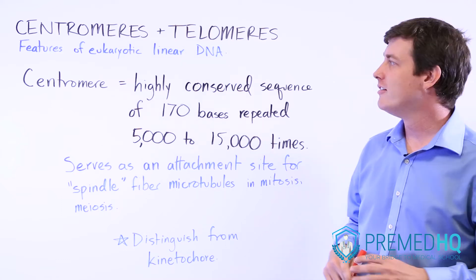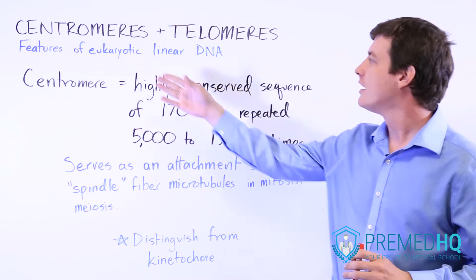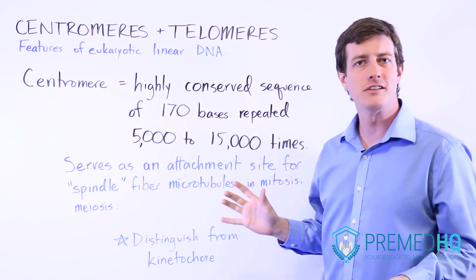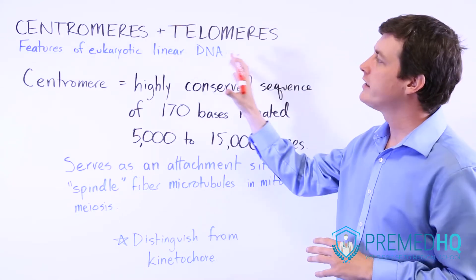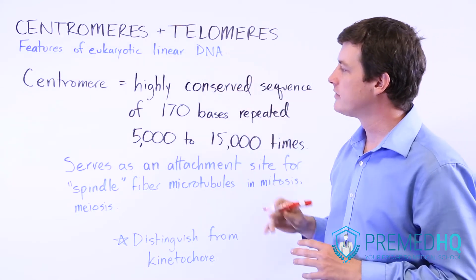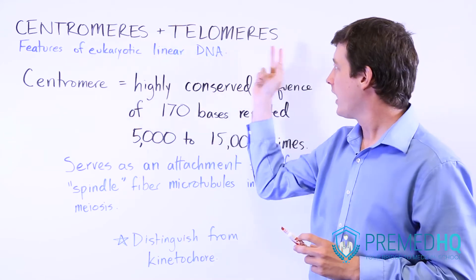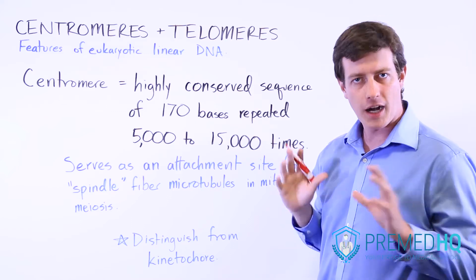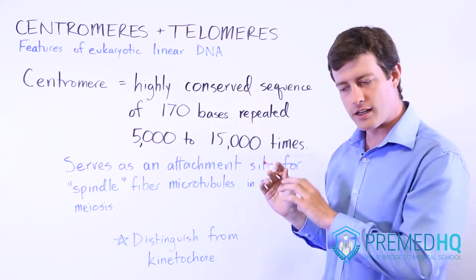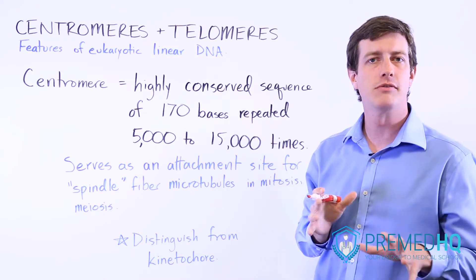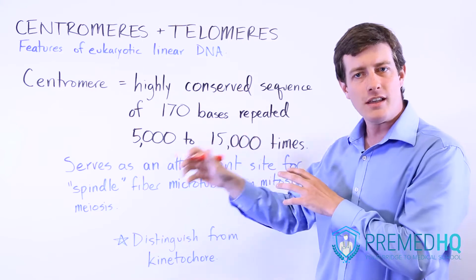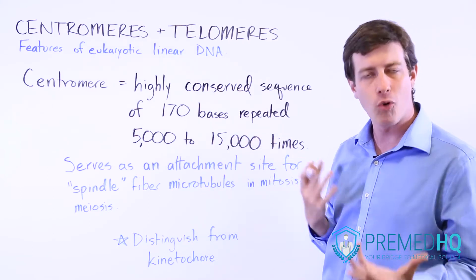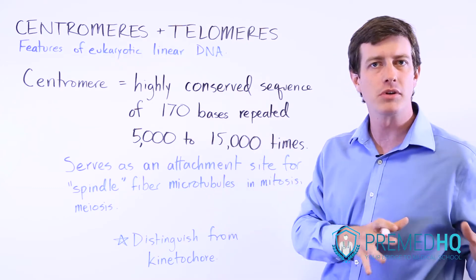Because of the nature of eukaryotic linear DNA and the ways in which these cells divide, there are two highly conserved features that have developed: centromeres and telomeres. Whenever you hear the term 'highly conserved,' that means it shows up at a lot of different phases throughout the evolutionary steps, and usually that means it's very important in the evolutionary process.